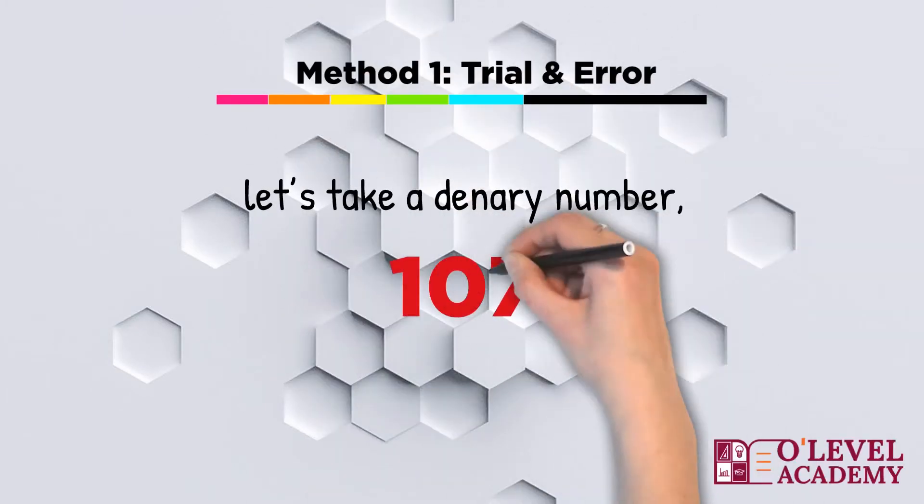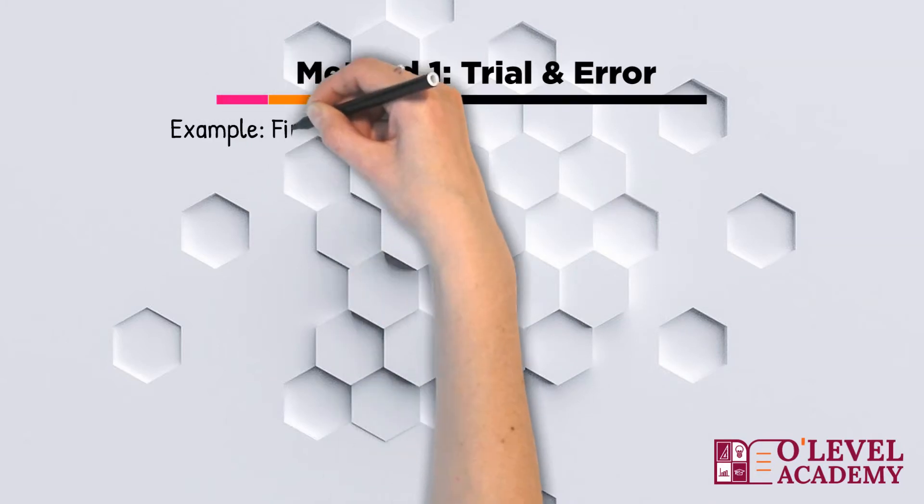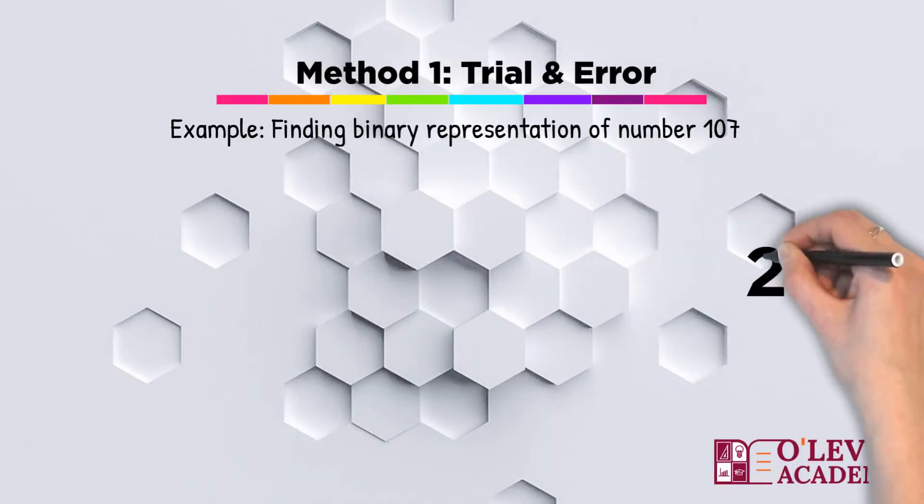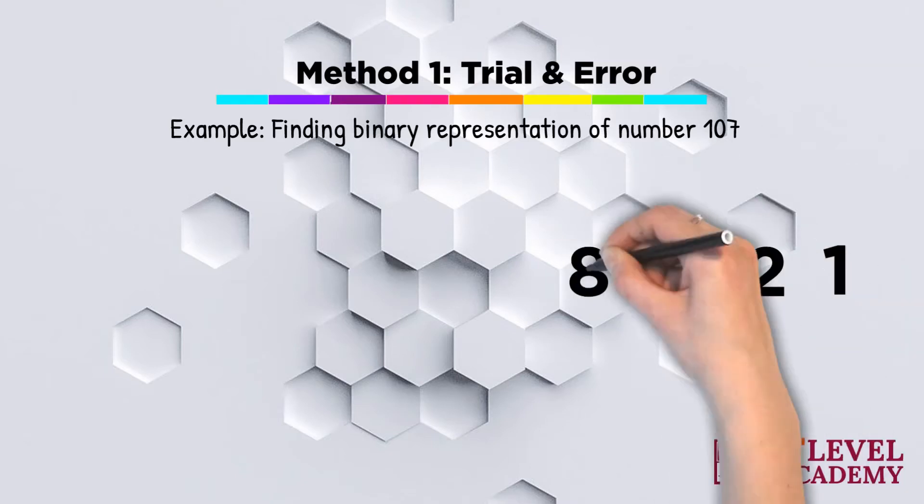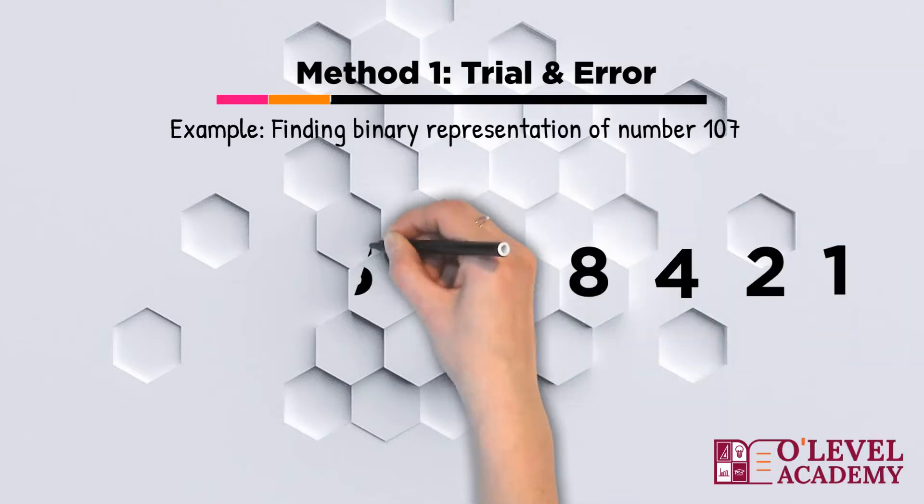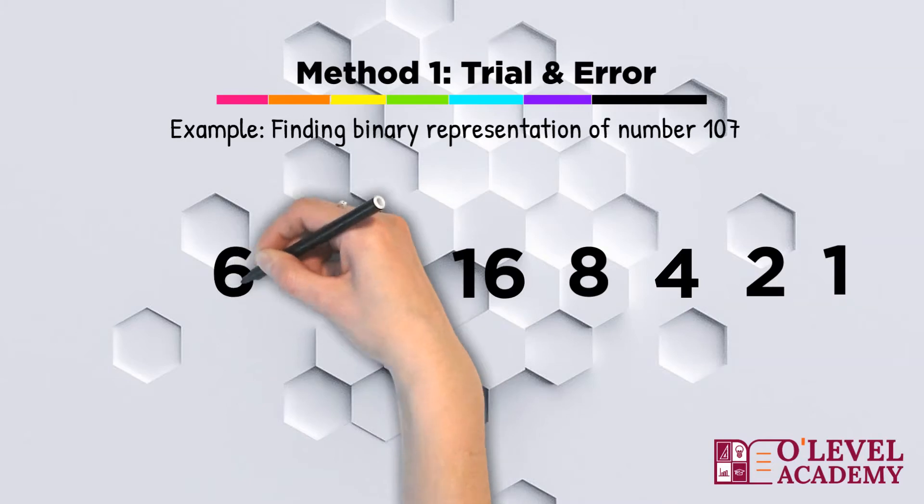Let's take our denary number 107. Method 1: Trial and Error. This method involves placing 1 and 0 at correct basis so that the sum equals the denary value.